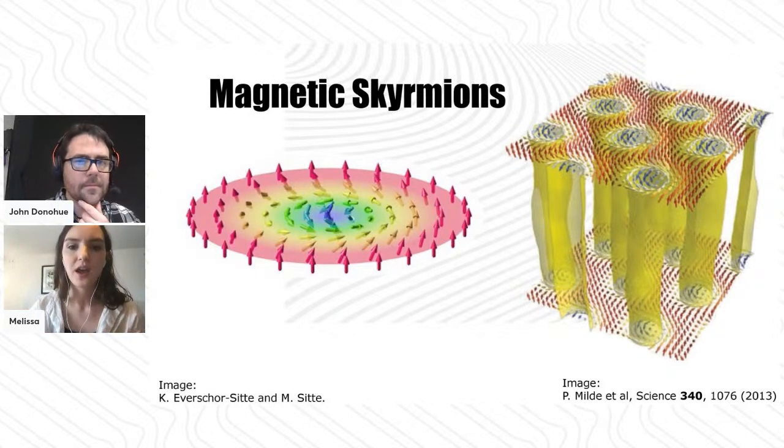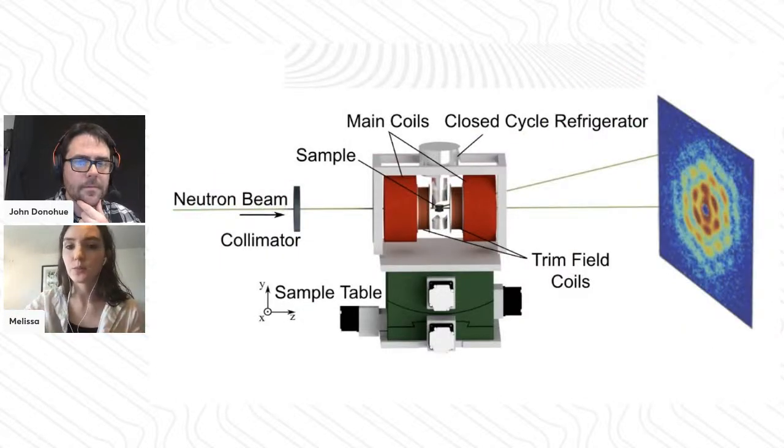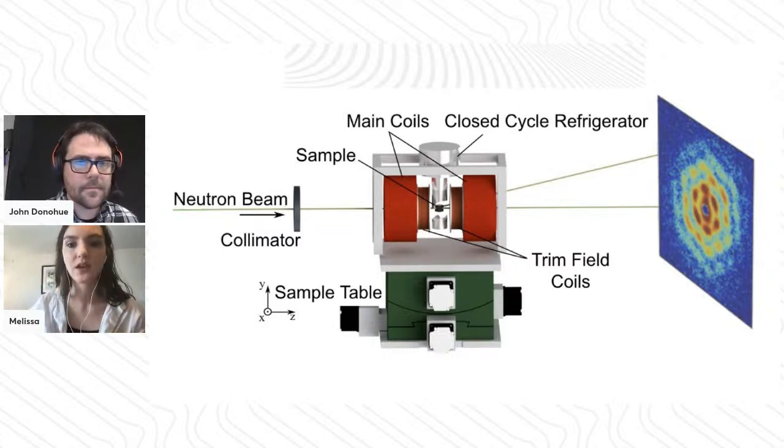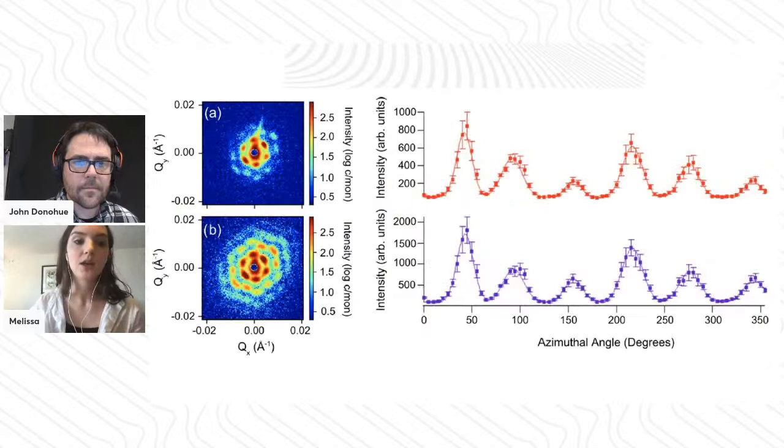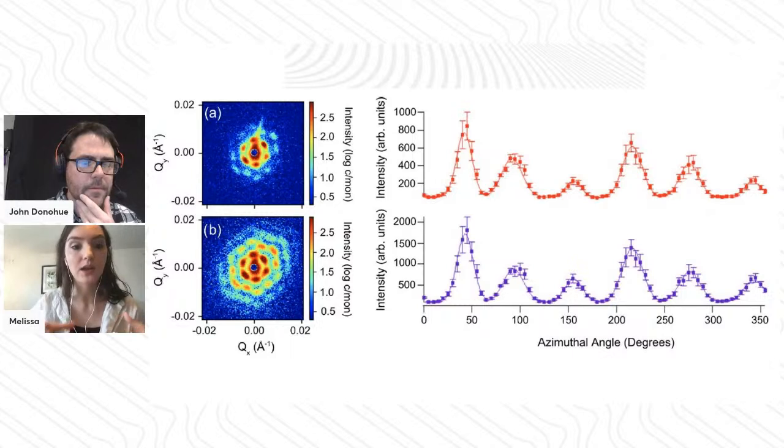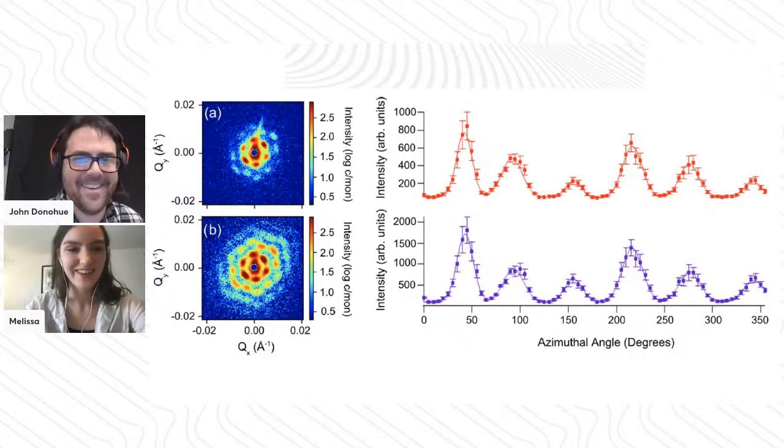In the SANS image, instead of having a really pretty hexagonal lattice, we're going to have a ring because you're going to have this random distribution of scattering in all these different directions. There's no set orientation of your lattice - it's a rotationally disordered superposition. When we initially look at it, we see something that's a smeared ring. Luckily, we have a way of ordering the ring into these beautiful six-fold lattices.